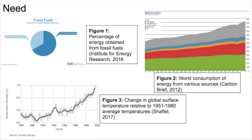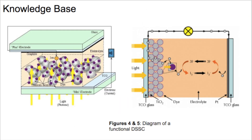Currently, most of the world's energy is a result of the burning of fossil fuels. This is not only dangerous to the environment, but it is also unreliable, as there are finite amounts of fossil fuels on Earth. Solar energy has been a promising alternative to traditional energy production. Dye-sensitized solar cells are a possible solution to this global energy issue.